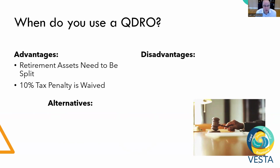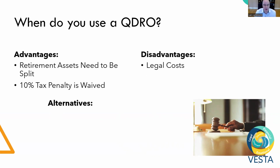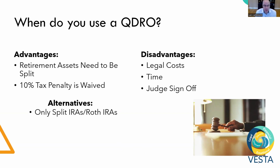There are also some distinct disadvantages of a QDRO. First, there are legal costs associated with it — a QDRO is a legal document, so you have to pay an attorney to draft it for you. It also takes time; it's not uncommon for QDROs to take several months. And a judge needs to sign off on the QDRO, so it's a process. There may be alternatives in your divorce outside of setting up a QDRO. IRAs and Roth IRAs can be split between spouses without needing a QDRO.